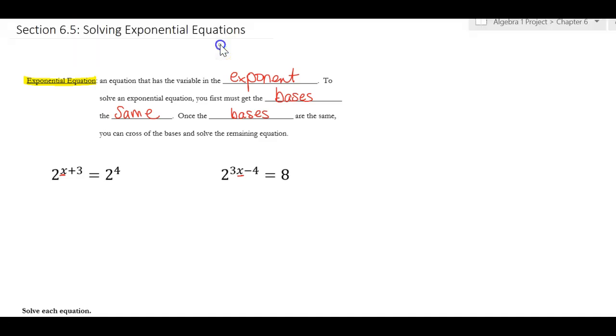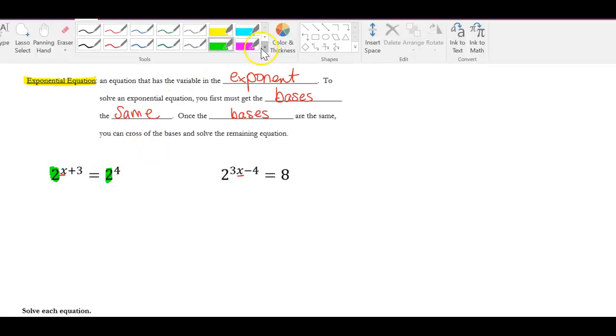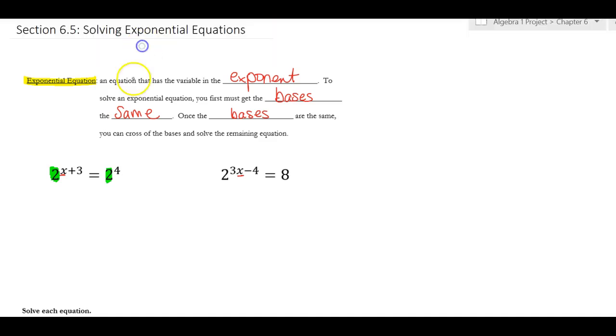When we look at this first example on the left, my base is 2, and on the right side my base is 2. Those bases are the same, and when you have equal bases, that means your exponents are also equal. So I cross off those bases, and now my equation becomes x + 3 = 4. To get rid of the plus 3, I subtract 3, so x = 1. The challenging part is when the bases aren't the same.